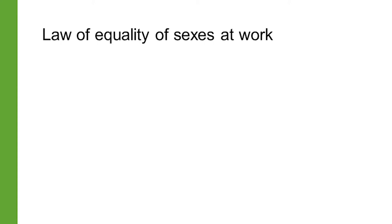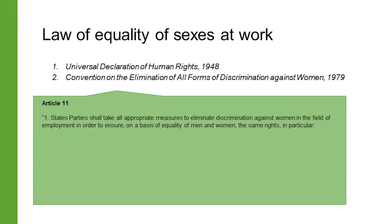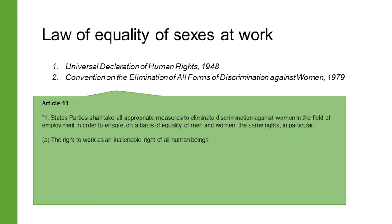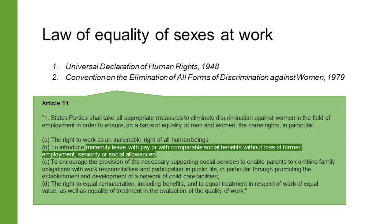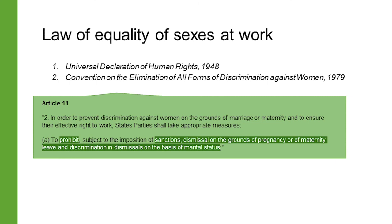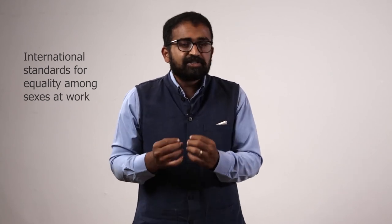Let us now turn our attention to the aspect of equality among the sexes at the workplace. Clause 2 of Article 23 of the UDHR guarantees everyone the right to equal pay for equal work. Article 11 of the Convention on Elimination of All Forms of Discrimination Against Women sets out the duties of states to eliminate discrimination against women in the field of work. The right to work for women, it says, is an unalienable right of all human beings. It requires equal pay for equal work, the right to social security, paid leave, and maternity leave with pay or with comparable social benefits without loss of former employment, seniority, or social allowances. Dismissal on the grounds of maternity, pregnancy, or status of marriage must be prohibited.